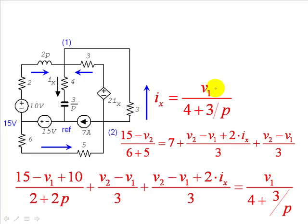Equals to the current Ix that we've seen before. We have three equations and three unknowns: V1, V2, and Ix. Now we solve them.